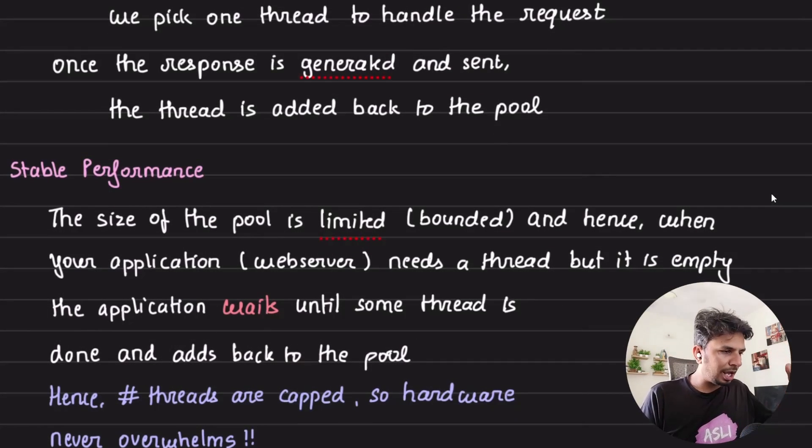No matter how many requests come in, you're capping your maximum number of threads as per the configuration of your hardware. But it has a side effect: if you have a thread pool of size 100, you cannot handle more than 100 requests at a time. Other requests would have to wait.